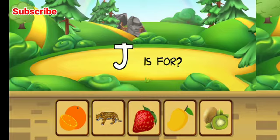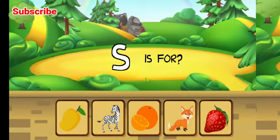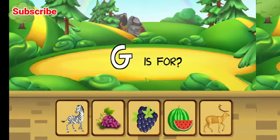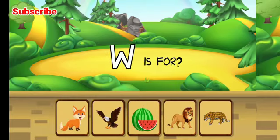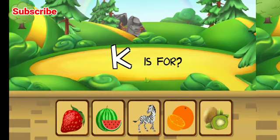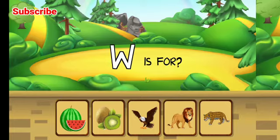Jaguar, excellent. D is for eagle, great job. S is for strawberry, awesome. G for goat, great, fantastic. W is for watermelon, excellent. K is for kiwi, fantastic. W is for watermelon, great job.